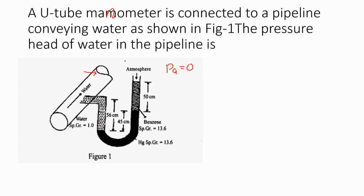How do we solve this numerical? We apply the pressure balance at this point. We have point 2 and point 1 — we will balance the pressure at point 1. Pressure at point 1 is equal to pressure at point 2.